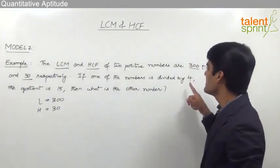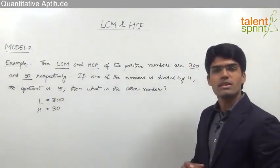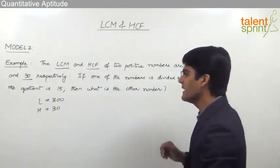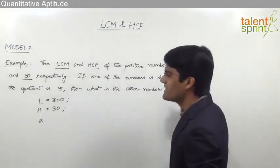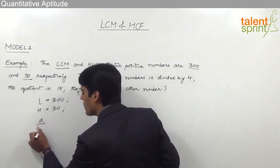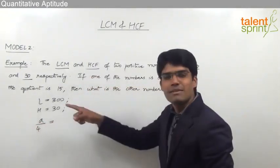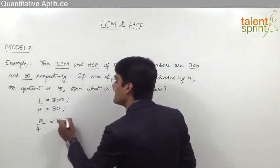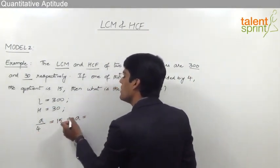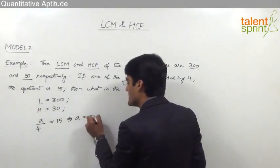If one of the numbers is divided by 4, the quotient is 15. Let us say one of the numbers is A. As given in the question, when A is divided by 4, A by 4, the quotient is 15. That means A when divided by 4, the answer is 15. So from this we can say that A will be equal to 15 into 4, that is equal to 60.